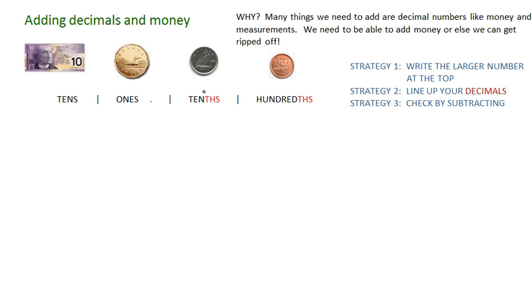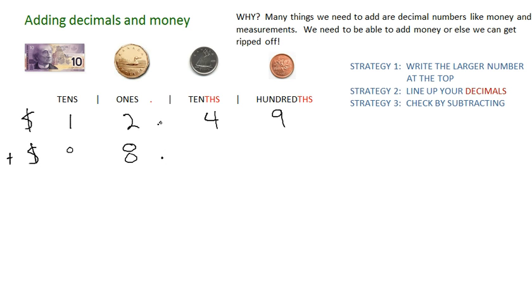So let's practice by adding a couple of prices — maybe eight dollars and twenty-nine cents and twelve dollars and forty-nine cents. I'm going to write the larger number at the top following strategy one: twelve dollars, so one ten, two ones, and forty-nine cents — four dimes and nine cents. Plus eight dollars and twenty-nine cents, so no tens, eight ones, eight dollars. I'm lining up the decimal spots, lining them all straight below and above each other: two dimes, nine cents.